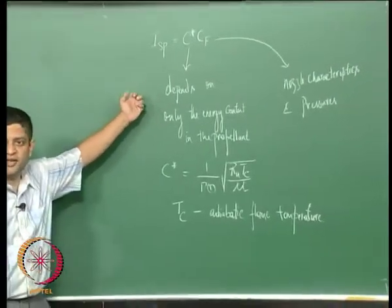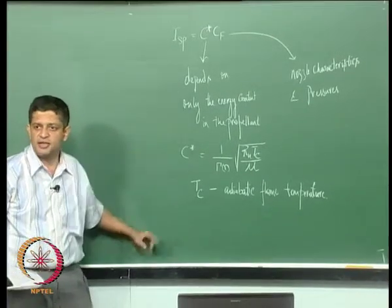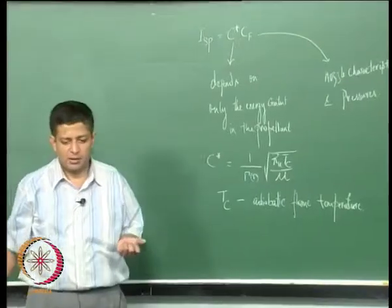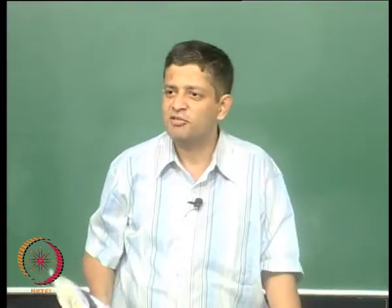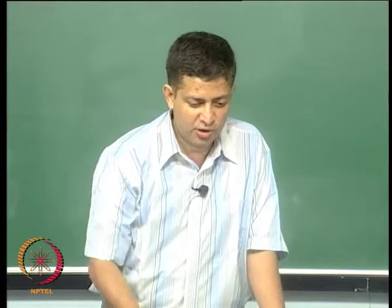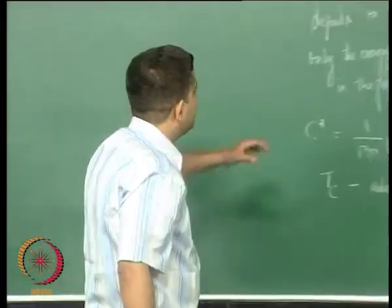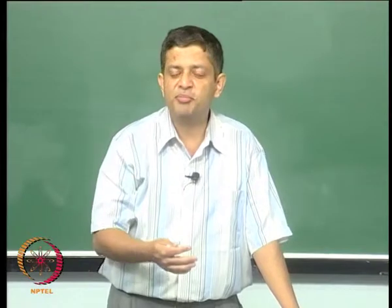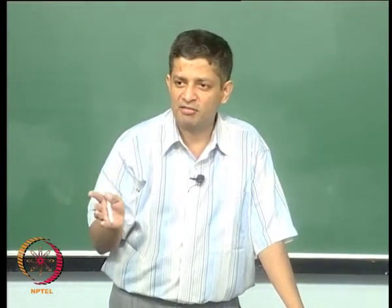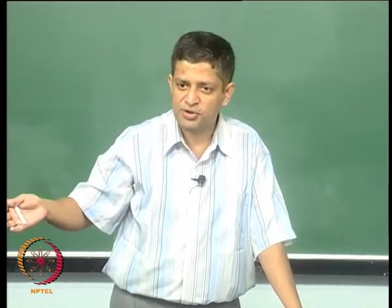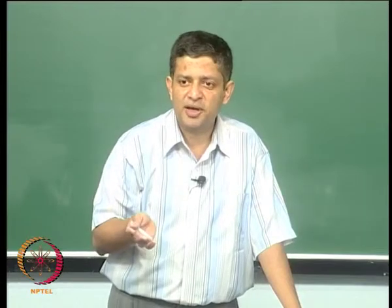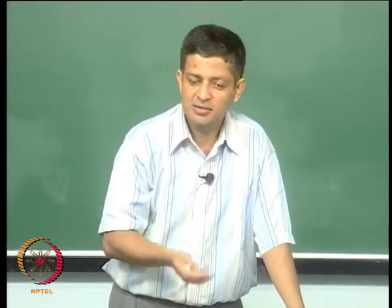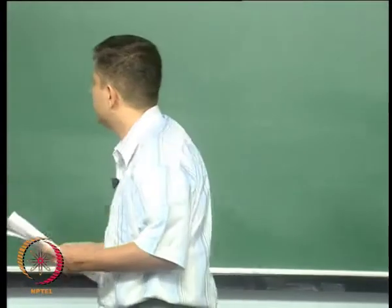As stated, ISP is defined as C star times CF. C star depends only on the energy content of the propellant. If we want to determine which propellant combination is better, we can make the comparison independent of CF: fix certain nozzle parameters — fix chamber pressure at a particular value, area ratio at a particular value, and ambient pressure as one atmosphere. Then ISP becomes independent of nozzle parameters, that is, independent of CF.